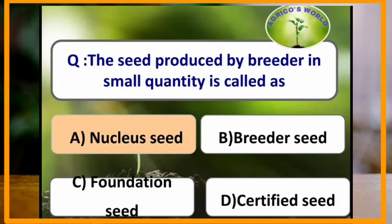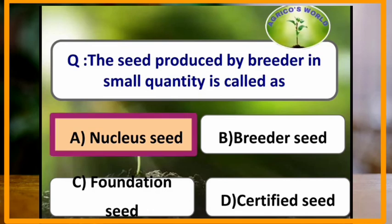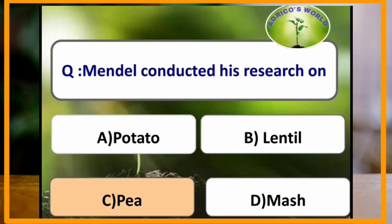The seed produced by a breeder in small quantity is called nuclear seed. Mendel conducted his research on which crop? Mendel conducted his research on pea plant.